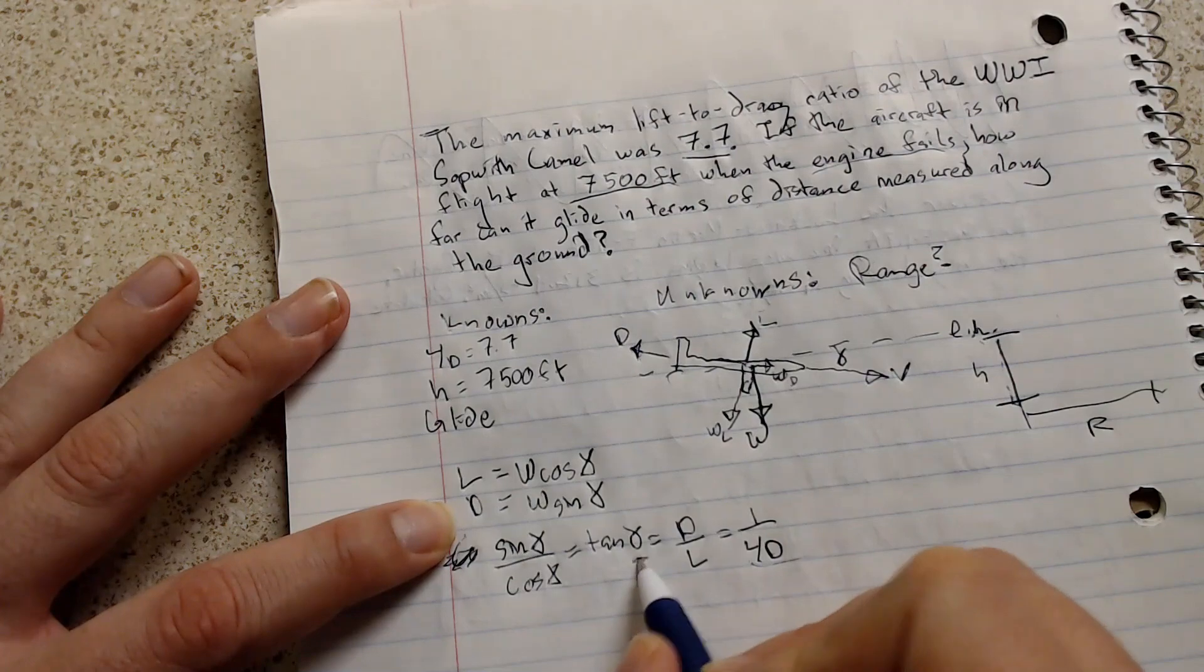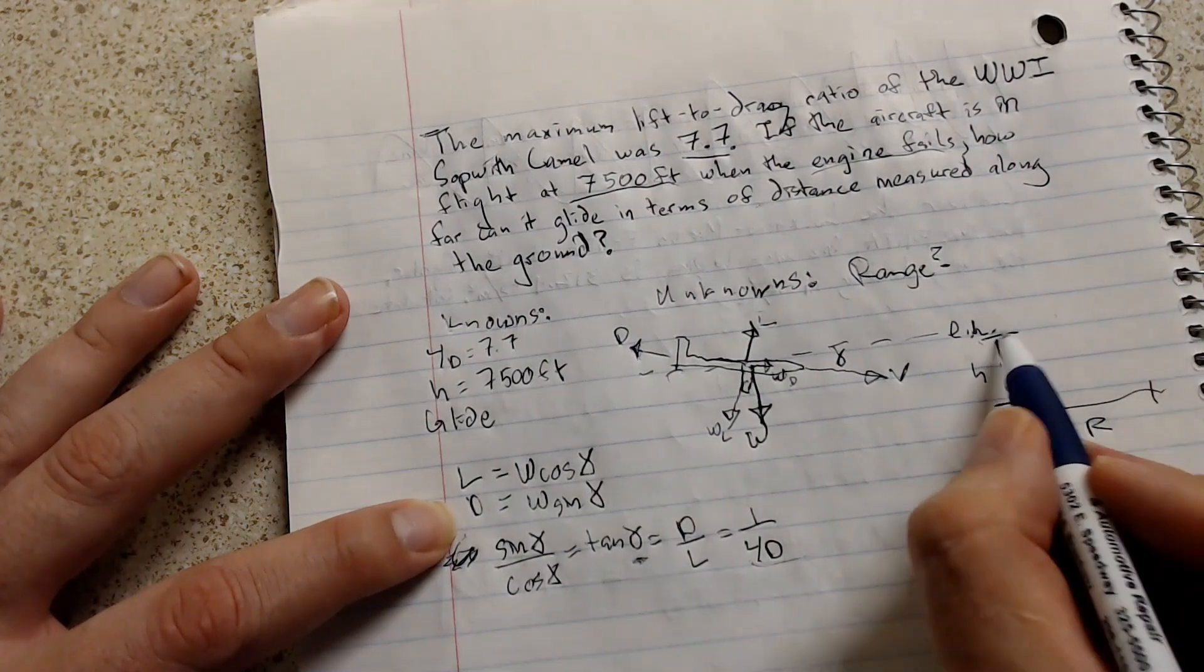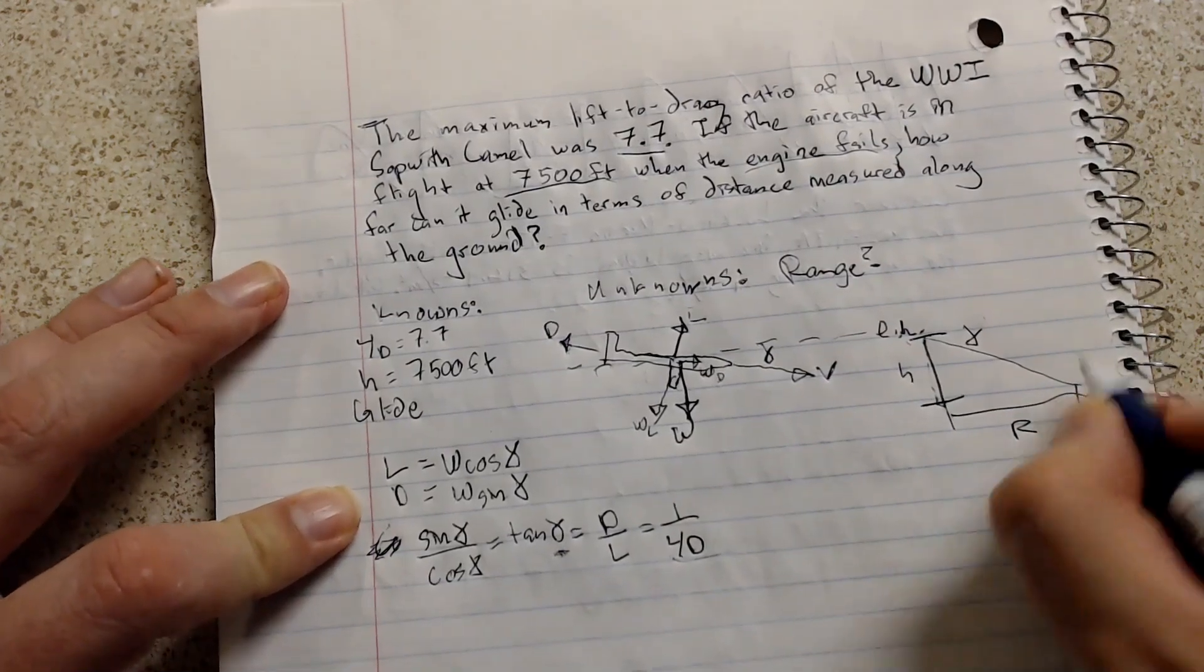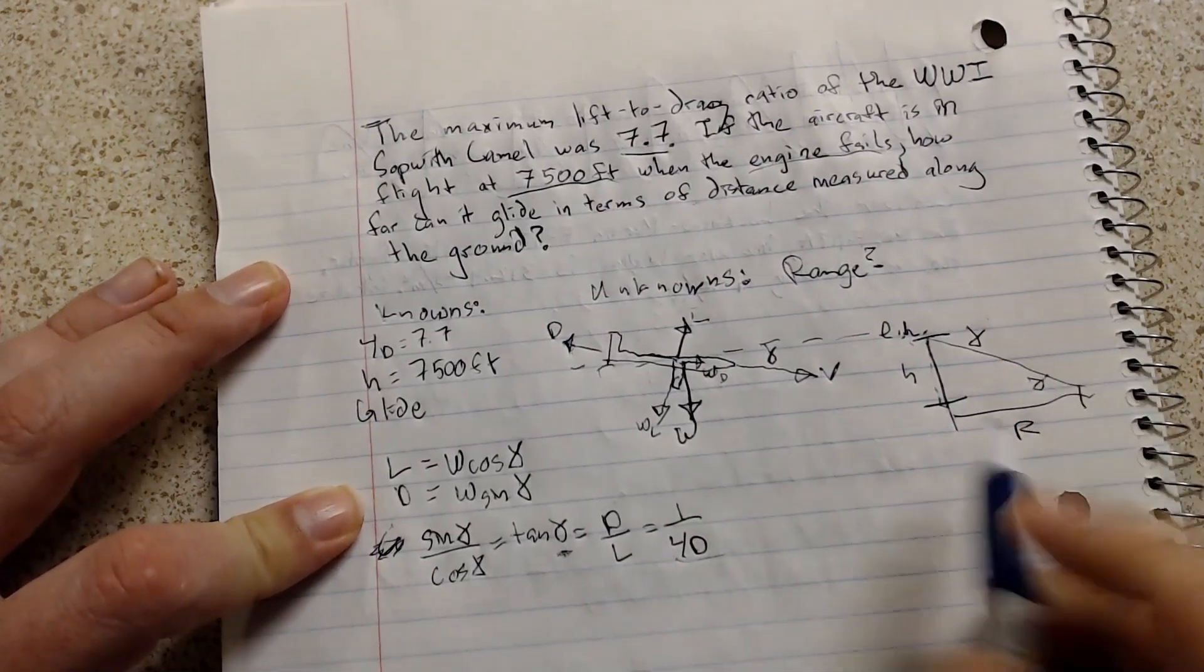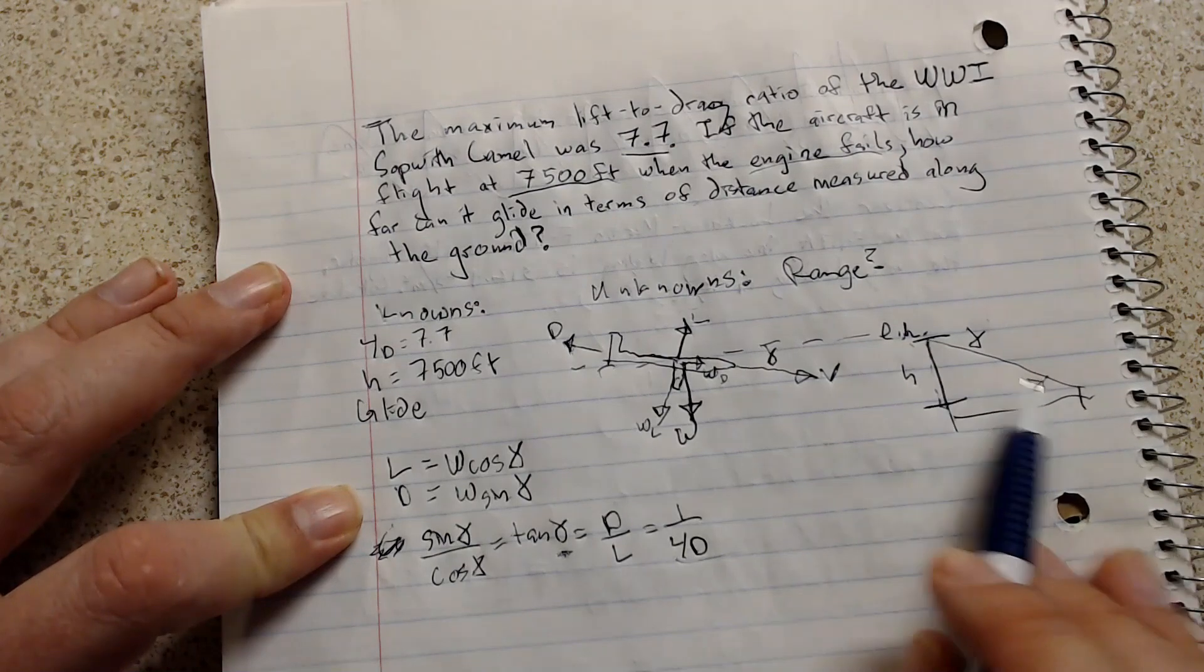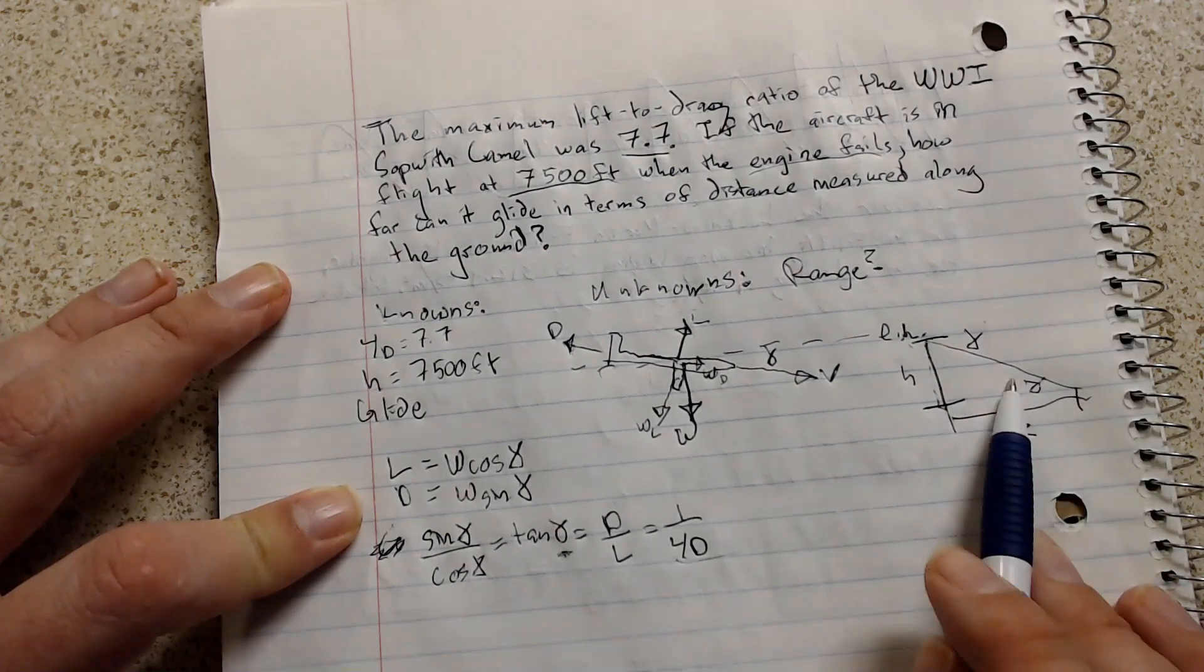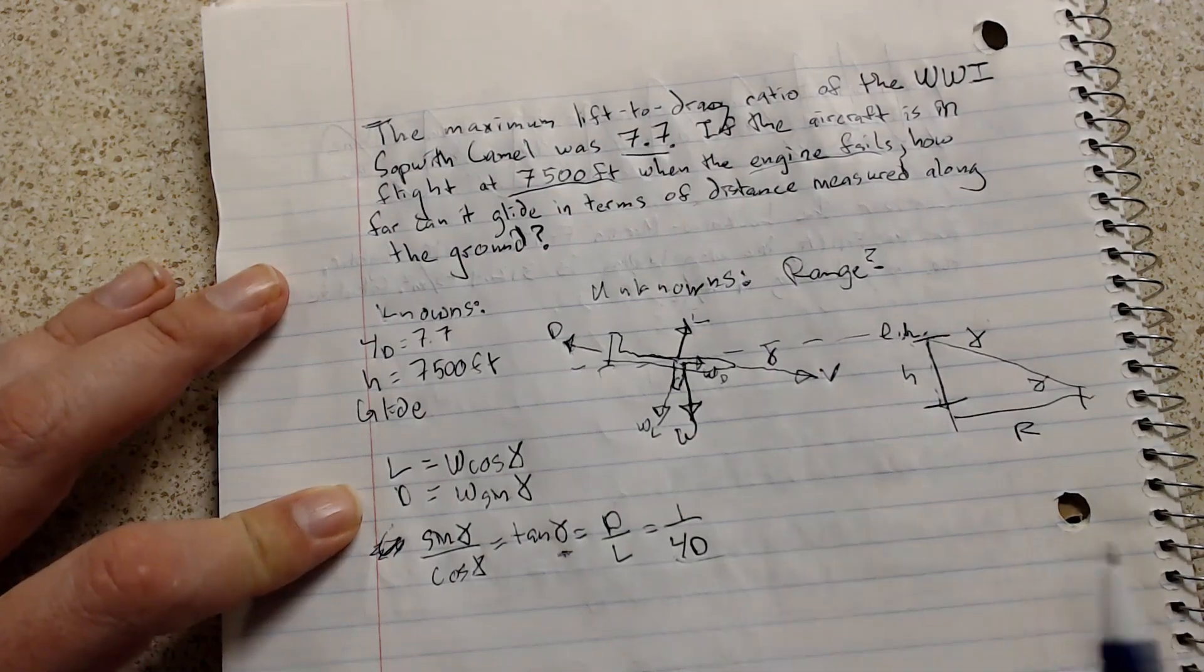This will give us the flight path angle. And with knowing the flight path angle over here, that's the same as this flight path angle over here, we can use some trigonometry to figure out what this range is with this flight path angle and this height. That's what we're going to try and do.